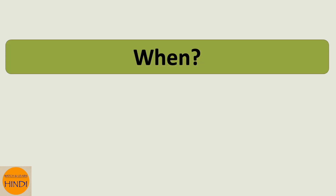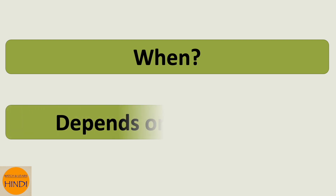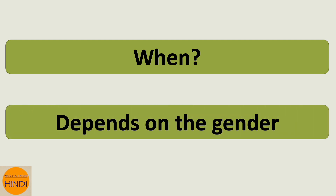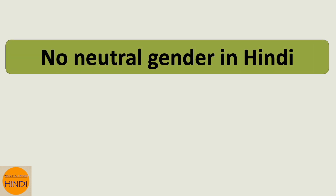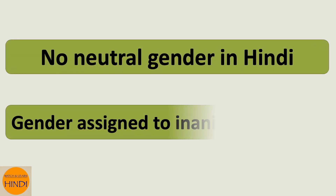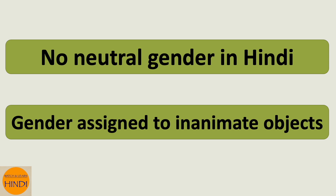The first question is: when does the name of a color change? The answer is, it depends on the gender of the thing or object being described. In Hindi, even inanimate objects are assigned a gender, which is a difficult thing not just for beginners but sometimes even for advanced learners of Hindi. It requires practice.